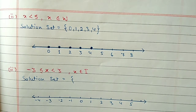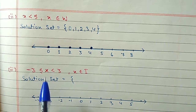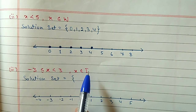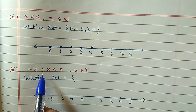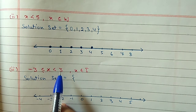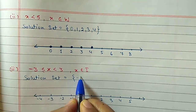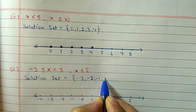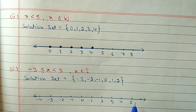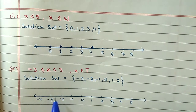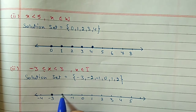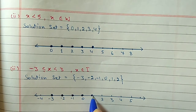Third part: minus 3 less than or equal to x less than 3, where x belongs to integers. The equal-to on the left means we include minus 3. Less than 3 on the right means we stop at 2. Solution set is {-3, -2, -1, 0, 1, 2}. Draw a number line, mark the integers, and highlight minus 3, minus 2, minus 1, 0, 1, and 2.